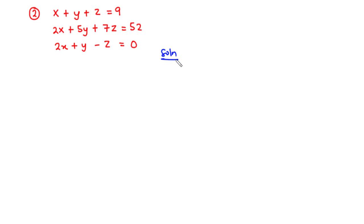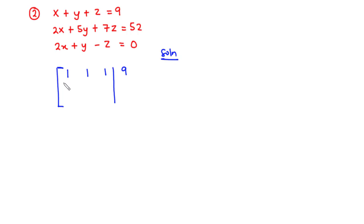The first thing we are going to do is to represent this system of linear equations in augmented matrix form. We represent the coefficients of x, y, z for the three equations, as well as the constants on the right-hand side. Equation 1 corresponds to row 1, equation 2 to row 2, and equation 3 to row 3. So the augmented matrix has rows: [1, 1, 1 | 9], [2, 5, 7 | 52], and [2, 1, -1 | 0].